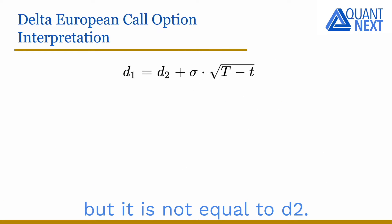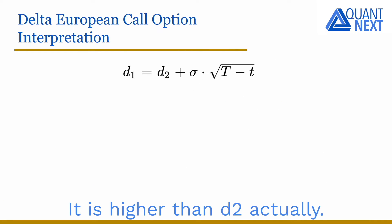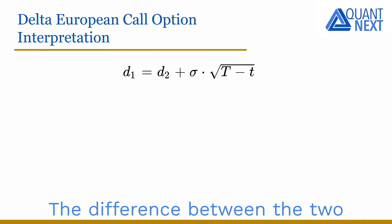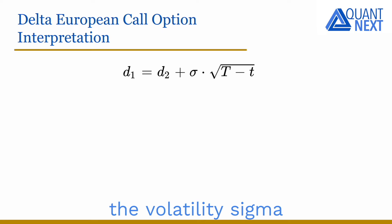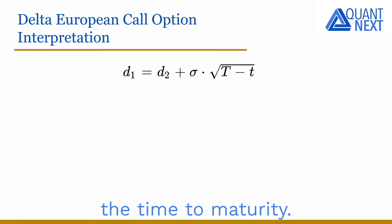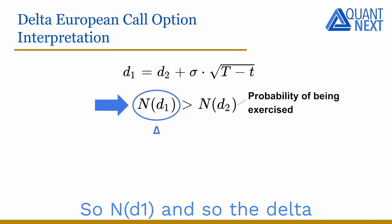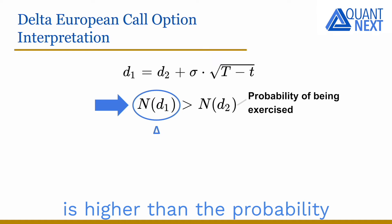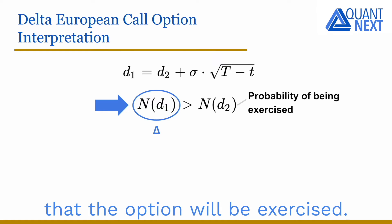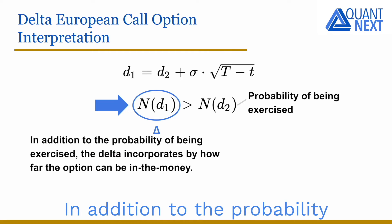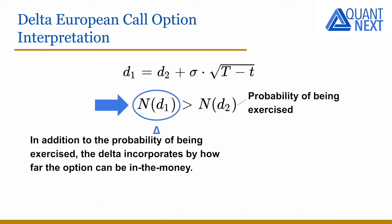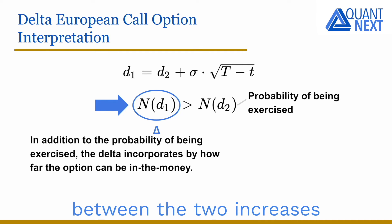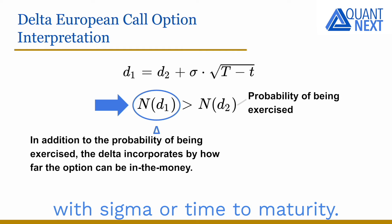D1 is close to D2, but it is not equal to it — it is actually higher than D2. The difference between the two is equal to the product of the volatility sigma and the square root of the time to maturity. So N of D1, and therefore the delta, is higher than the probability that the option will be exercised. In addition to the probability of being exercised, the delta incorporates by how far the option can be in the money, and the difference between the two increases with sigma or time to maturity.